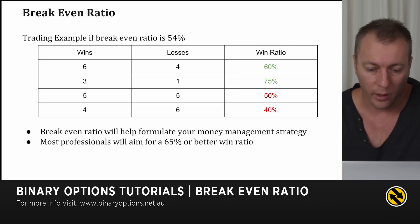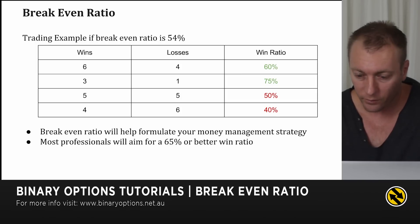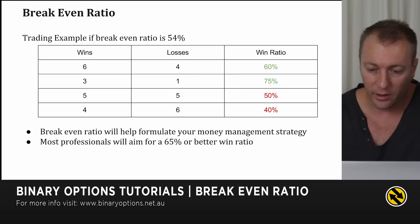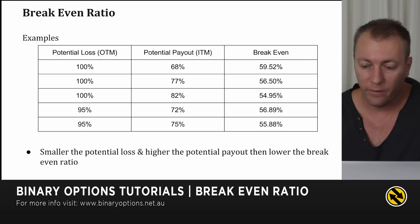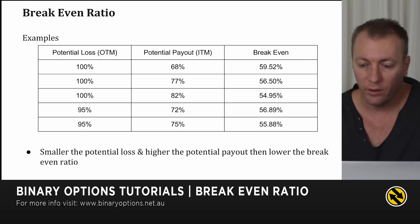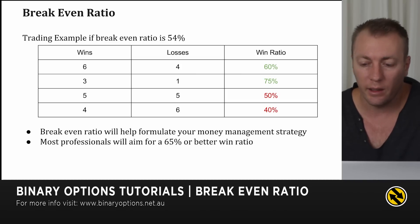Most professionals will aim for a 65% or better win ratio over the lifetime of their trading. As you can see, most break-even ratios are around the 55–60% level, so anything winning over 60% means you're going to be profiting over the long term.